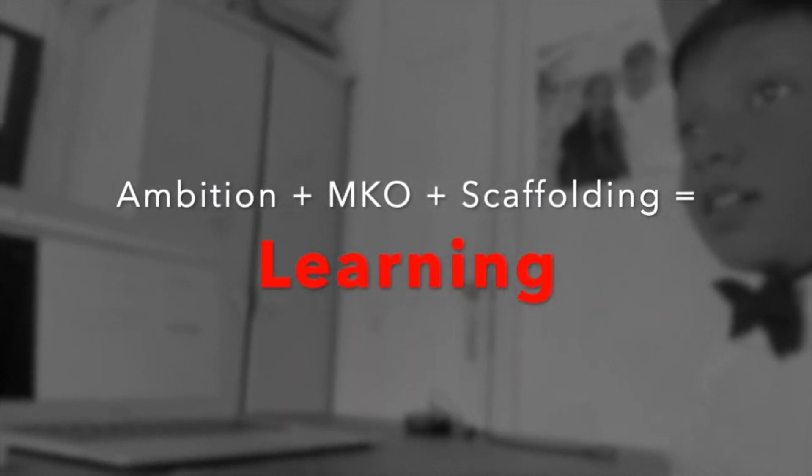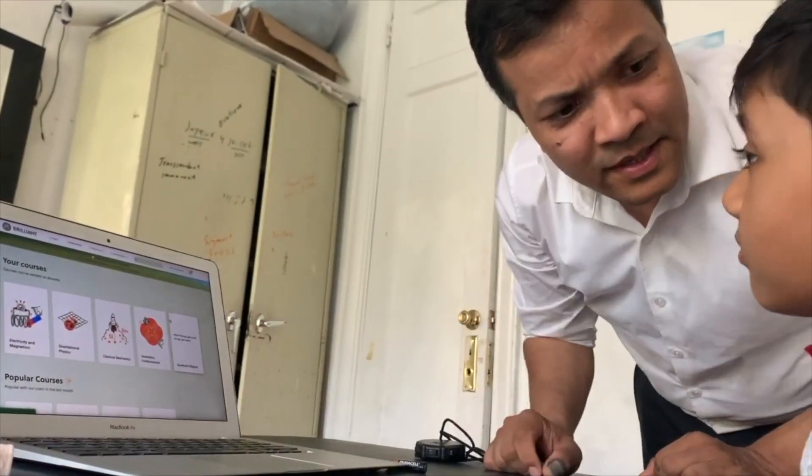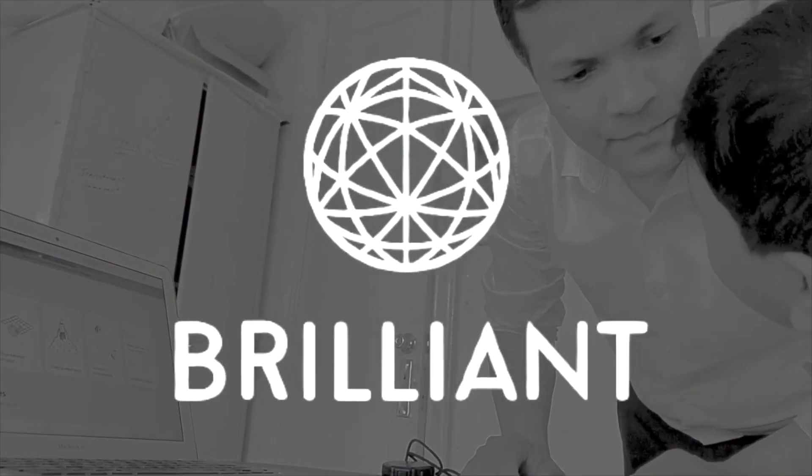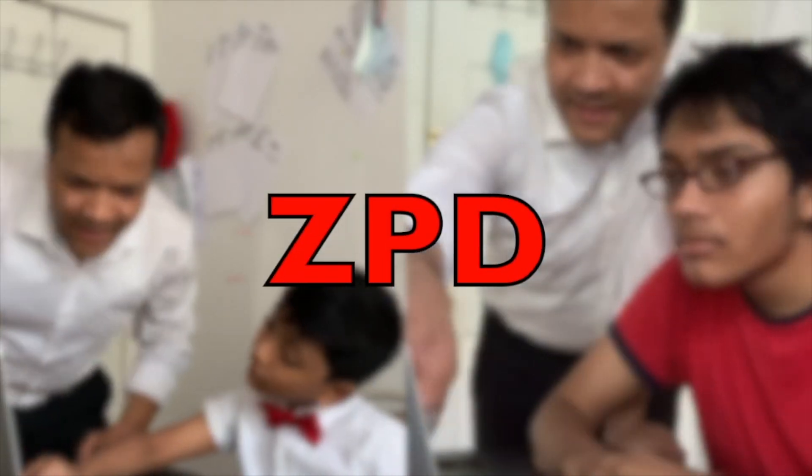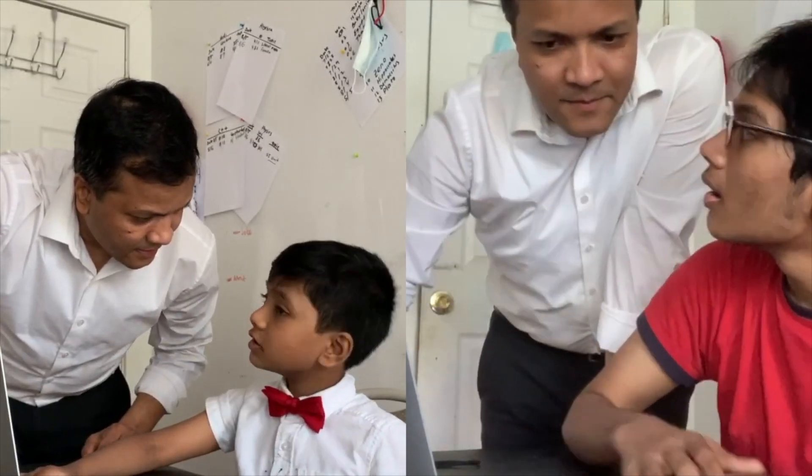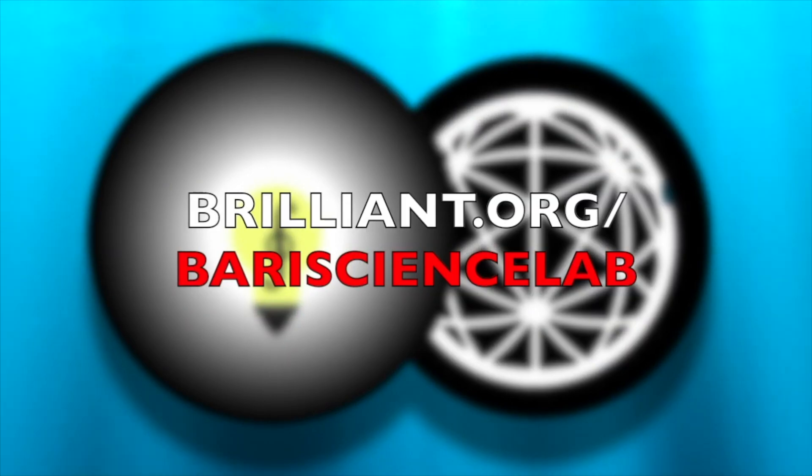We believe anyone can learn anything. That's why our motto is memorization is a crime, and that's why we partnered with Brilliant. Brilliant transforms math and science into hands-on activities so that you too can understand everything from first grade math to E equals mc squared. Barry Science Lab and Brilliant is your MKO and will give you the scaffolding to expand your ZPD until you become the next Sir Isaac Newton or Albert Einstein. Visit brilliant.org slash Barry Science Lab today. The first 50 of you to use that link will get a 20% discount on the Brilliant annual subscription. Don't forget that you too can become the next Einstein. So let's fall in love with math and we'll see you soon.